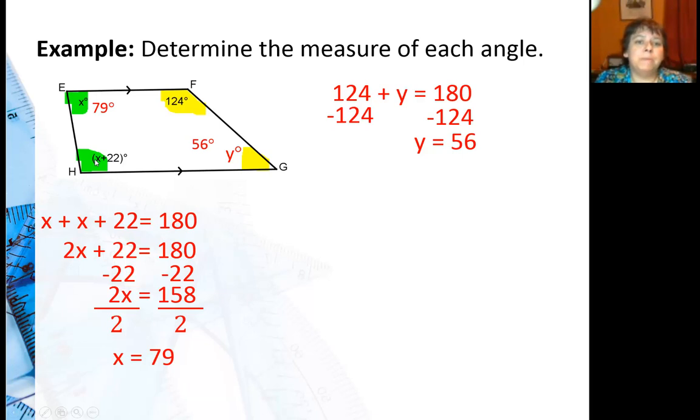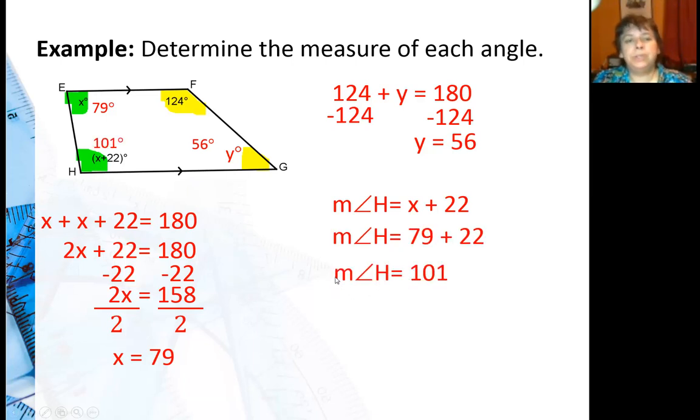Finally, that makes it pretty simple. I can either do this last angle two ways. I could say 79 plus this angle is 180, or I could just say it's X plus 22. Let me just add 79 plus 22, which is 101. And that does work out. 79 plus 101 is 180. They are supplementary.